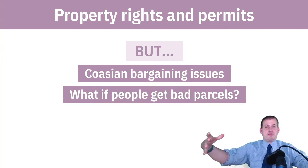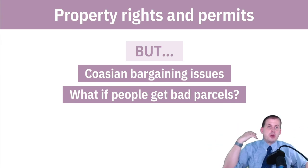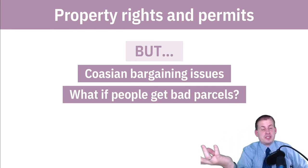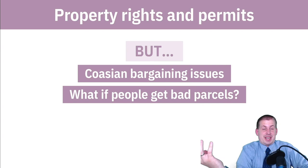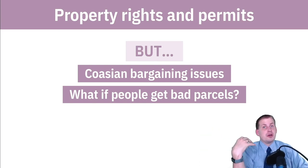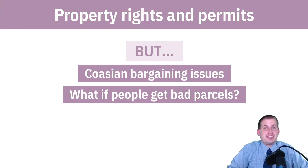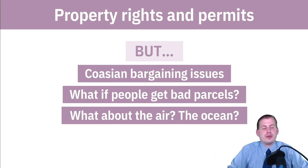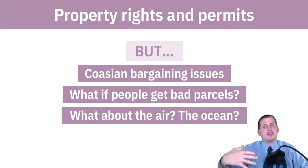What happens if people get bad parcels? If you divide a big commons into 16 squares, one might be in the shade and super muddy at the bottom of a hill — somebody has to get that square. They'll have to negotiate to avoid it, but there will be a loser. Is that fair? Do they need compensation for the bad plot? There's no guidance here. Also, some things can't be parceled out: we can't parcel out the air or the ocean, and even forests are hard because people can easily cross borders into neighboring parcels.